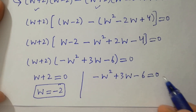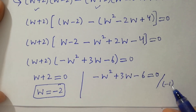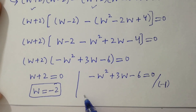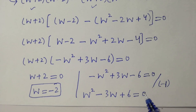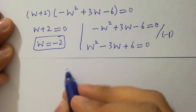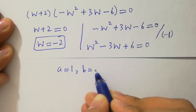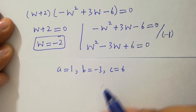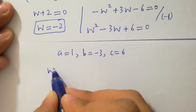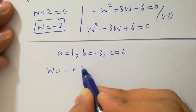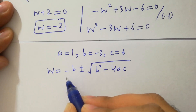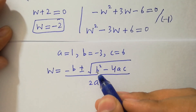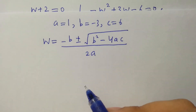Dividing the second equation by minus one gives us w squared minus three w plus six equal to zero, which is our quadratic equation. Comparing with standard form, a equals 1, b equals minus 3, and c equals 6. Applying the quadratic formula: w equals minus b plus or minus square root of b squared minus 4ac, over 2a.